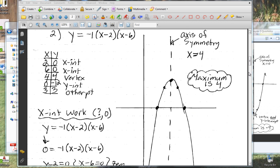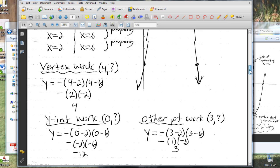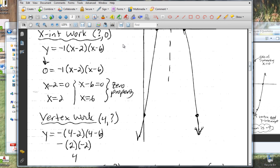So our x-intercept work is to find the x-intercept, don't we know that y has to be zero? So we plugged in y for zero, and then we can use what's called the zero property, which says zero times anything equals zero. So that means we can set x minus two equal to zero, and x minus six equal to zero. And that's known as the zero property.